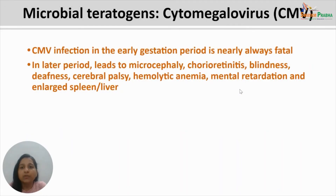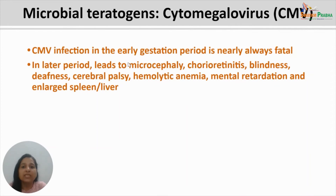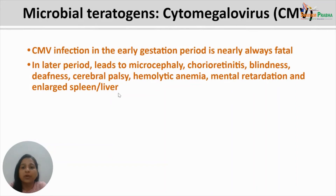The second important microbial teratogen is cytomegalovirus (CMV). CMV infection in early gestation is nearly always lethal. However, in later periods it leads to anomalies including microcephaly, choreoretinitis, blindness, deafness, cerebral palsy, hemolytic anemia, mental retardation, and enlarged spleen or liver.